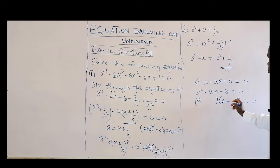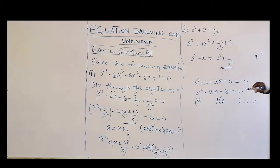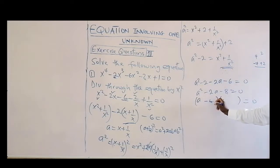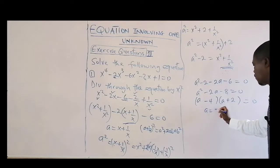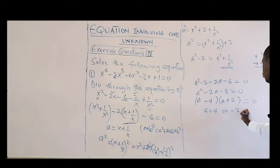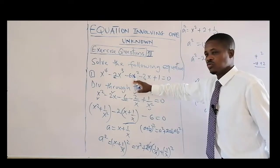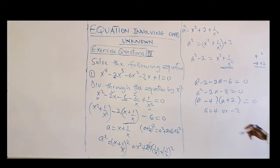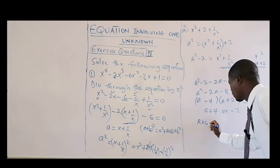We can now factorize: a squared minus two a minus eight equals zero. The factors of eight are four and two; using minus four and plus two gives the middle term. So a equals four or a equals minus two. Note that a is a substitution variable, not the final answer.